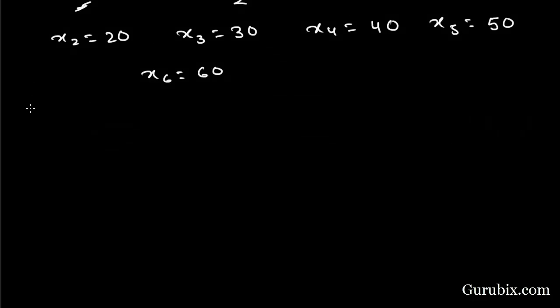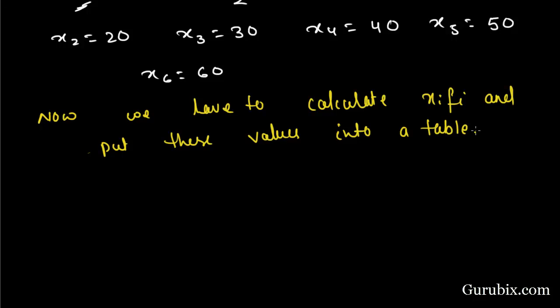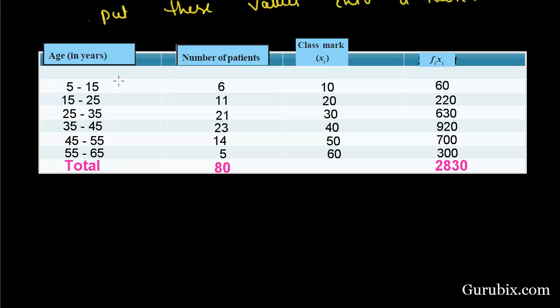Now, we have to calculate xi times fi and put these values into a table. Let's draw a table. In this table, there are four columns. First column is age in years, second column is number of patients which is our fi, third column is xi means class mark, fourth column is the product of fi with xi.